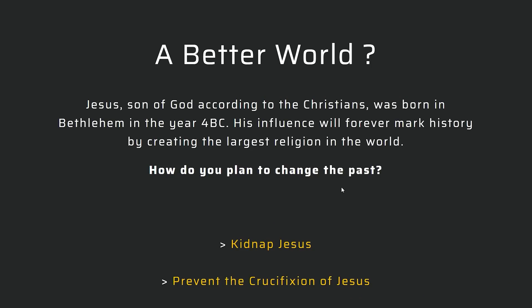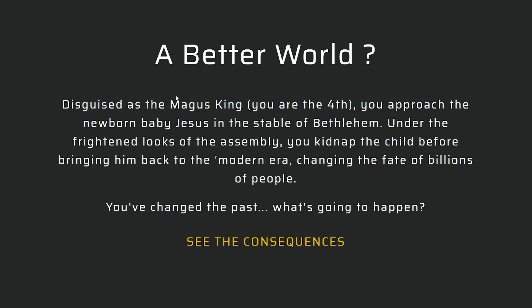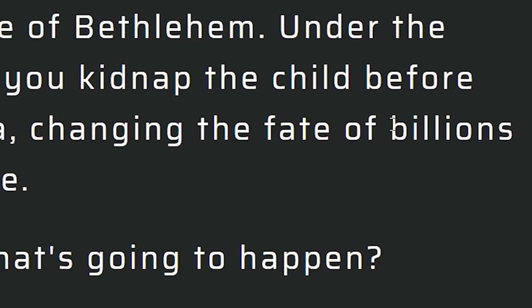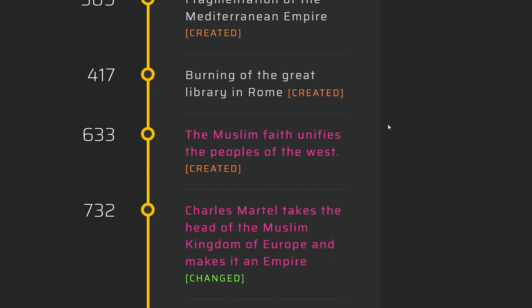We could either kidnap Jesus or prevent the crucifixion. I'm just trying to think of some of the consequences. If he was never crucified, what would happen? And if he was kidnapped, well, what would be worse? Disguised as some king, I approached the baby Jesus and stole him away. I've changed the fate of billions of people. So the dude just vanished, and now in 633, the Muslim faith unifies the people of the west.